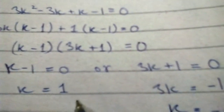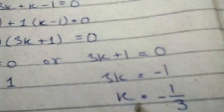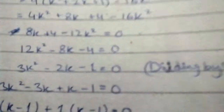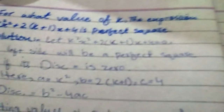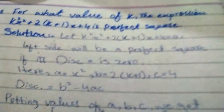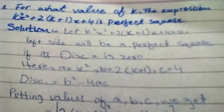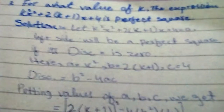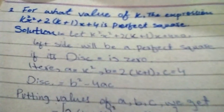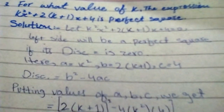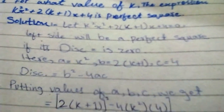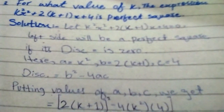تو students، k کی value یہاں 1 آئی اور یہاں k کی value -1/3 آئی۔ یہ تھا آج کا question۔ آپ کو جو سمجھ نہ آئے وہ comment section میں پوچھ سکتے ہیں۔ Thank you for watching، میرے video کو like کریں، share کریں اور channel کو subscribe کریں۔ اللہ حافظ۔